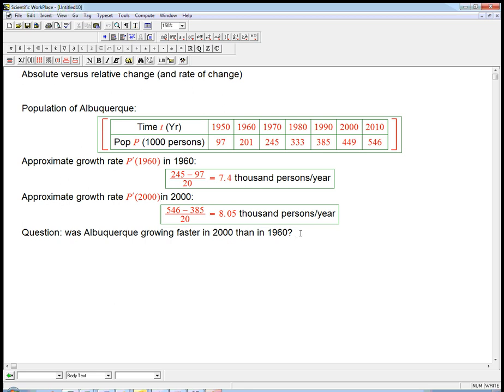I heard some conversations, and one thing was it depends on how you look at it. We didn't get to explore that, but that's a great answer to almost any question. If we just measure it by comparing the p primes, the slopes of the tangent line, then 2000 is growing slightly faster.